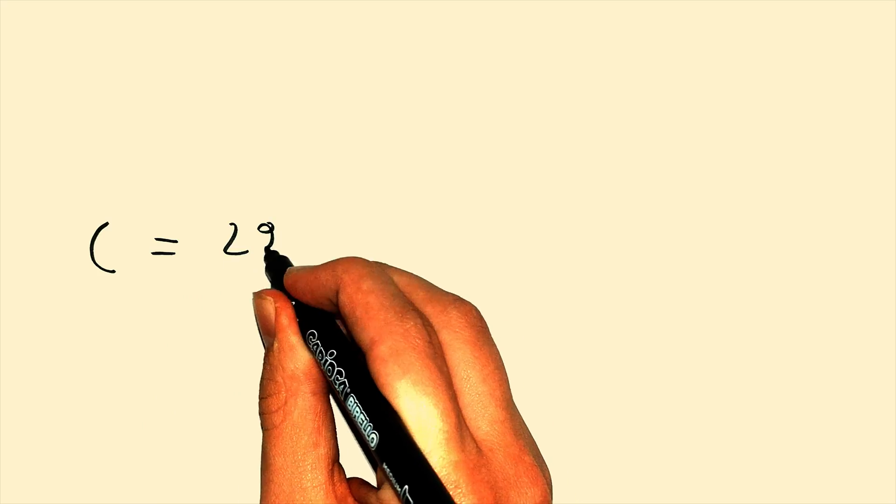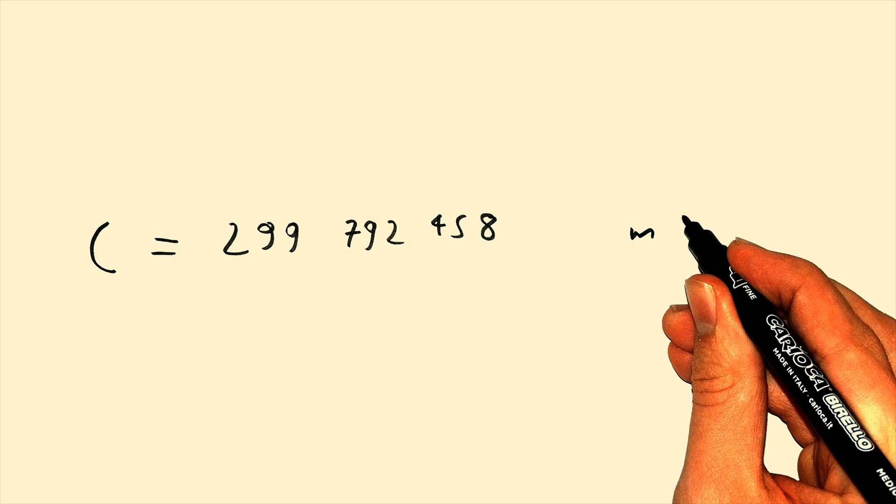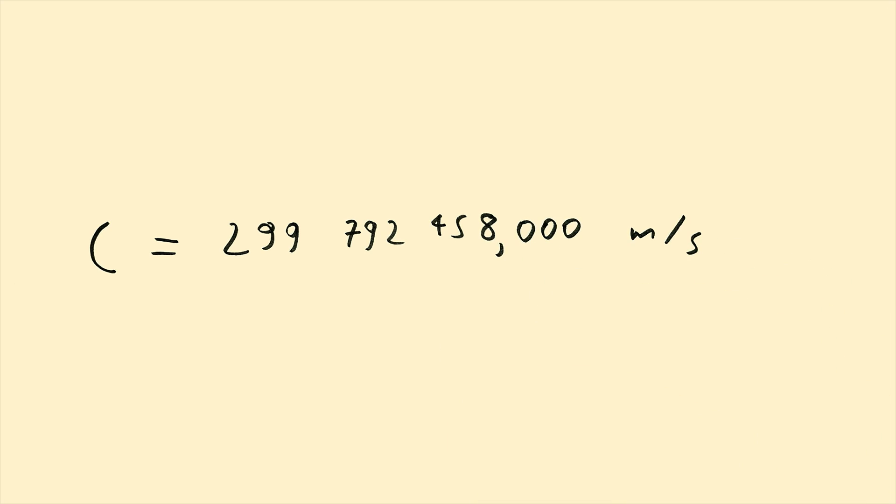The speed of light is 299,792,458 meters per second. Exactly. No, seriously. By coincidence? No, let me explain.